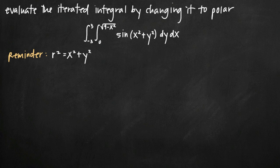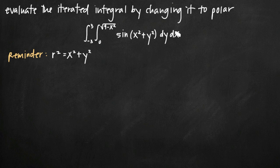Today we're going to be talking about how to evaluate an iterated integral by changing it from Cartesian coordinates to polar coordinates. In this particular problem we've been given the integral from negative 3 to positive 3, of the integral from 0 to square root of 9 minus x squared, of sine of the quantity x squared plus y squared, dy dx. This iterated integral is given in Cartesian coordinates because we've got x and y. We need to evaluate it by changing it to polar coordinates, which will put the whole thing in terms of r and theta.